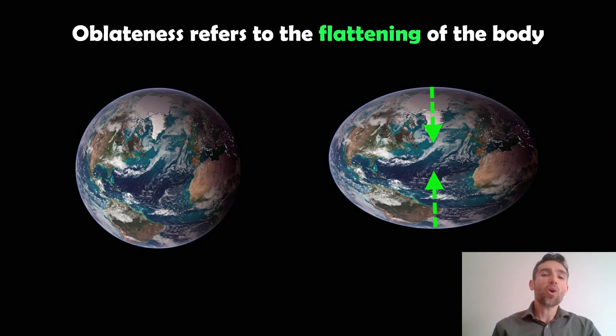So what does it actually mean? Well, it refers to the flattening of a body. So here you've got Earth. Earth is fairly close to being spherical, although I'm sure some people will argue against that. And on the right hand side there, I've essentially squashed it at the poles and made it flatter. So it's wider at the equator than it is at the poles. That would be referred to as being more oblate than the one on the left hand side.